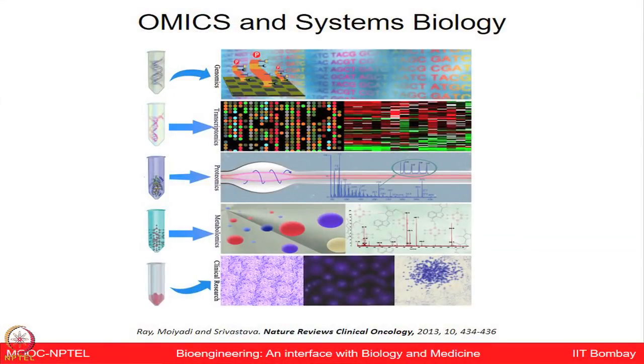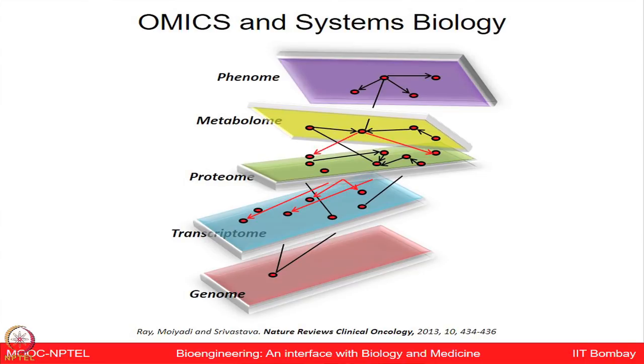The emerging field is omics and systems biology, where clinical information is integrated with data obtained at the gene level (genome), transcript level (transcriptome), protein level (proteome), metabolites at the metabolome level, and phenotypic behavior at the phenome level. This integration is very powerful and generates enormous datasets — big data — requiring a lot of computational power and analysis. This is an area that engineering undergrads can pursue: how to integrate information, build models, create simulations, and use those to predict the behavior of unknowns, as pursued by computational engineers in systems biology.